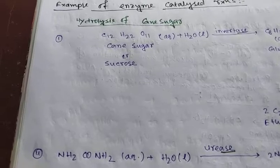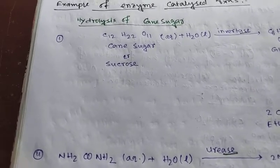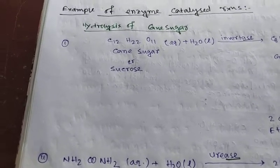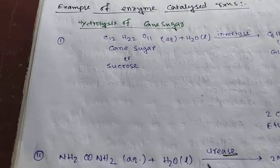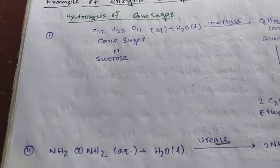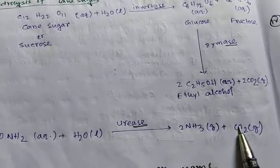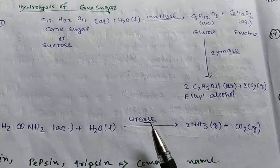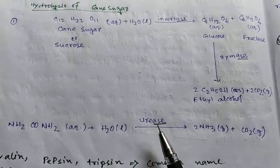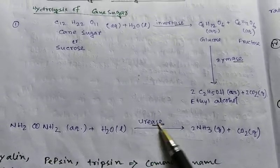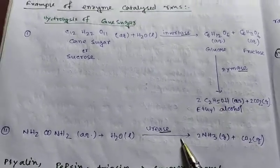Urease is an enzyme that breaks down urea into ammonium and carbon dioxide. Zymase is another enzyme used in fermentation.